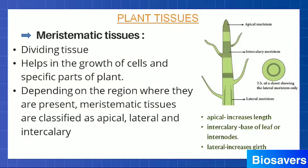Intercalary meristem is present in between the nodes or the internodes of the stem. Nodes are the places from where leaves arise. So this is the first node and this is the second node — the space between them is known as the internode. So intercalary meristem is present in between the internodes. When cells here divide, they increase the width of the stem. Likewise, lateral meristem is present at the base of the stem, and here also when cells divide, it increases the surface area of the root and thus the girth — the width — of the stem.